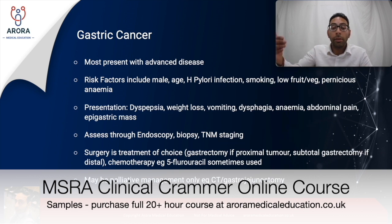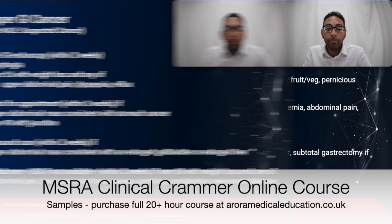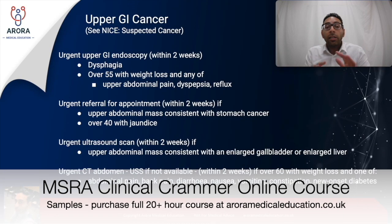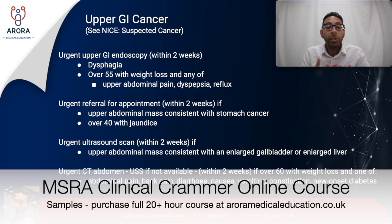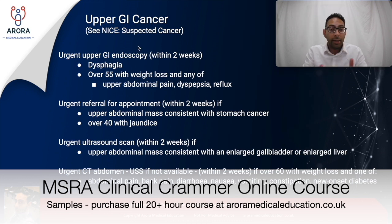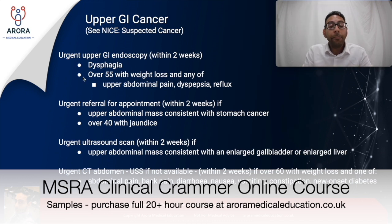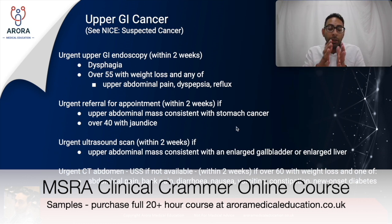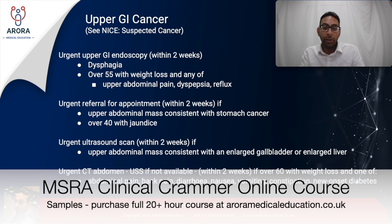Looking at upper GI cancer and suspected upper GI cancer guidelines as per NICE — you need to know this inside out for your exam. There are four things that can be done within two weeks on an urgent basis if upper GI cancer is suspected. Number one is an urgent upper GI endoscopy.